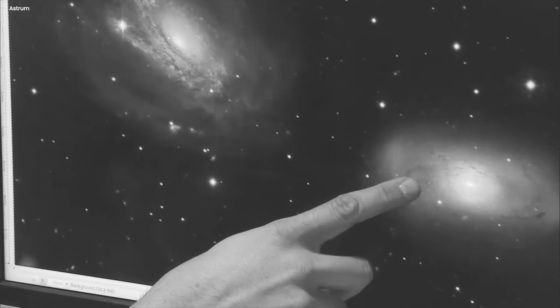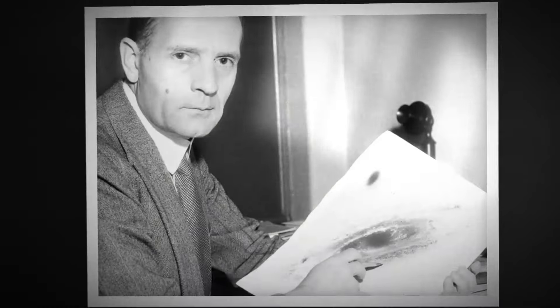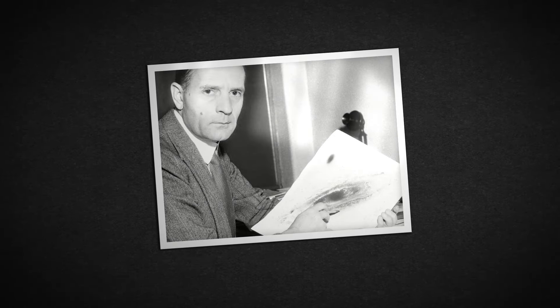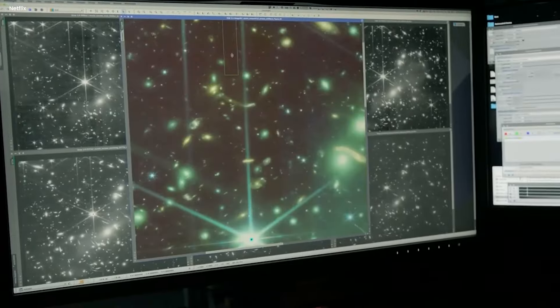Remember, galaxies were a pretty new concept then. Edwin Hubble's famous paper proving the existence of another galaxy, Andromeda, had only come out two years before. So Oort was on the cutting edge, trying to understand our own galactic neighborhood.